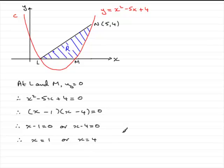So therefore what we have is L has coordinates 1, 0 and M has coordinates of 4, 0. All right.